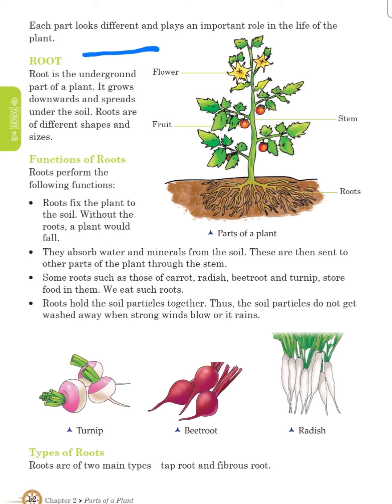What is root? Root is the underground part of a plant. It grows downwards and spreads under the soil. Roots are of different shapes and sizes. Functions of root: roots perform the following functions. Roots fix the plant to the soil. Without the roots, a plant would fall. They absorb water and minerals from the soil.